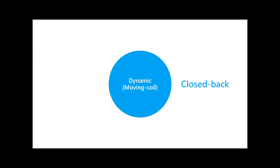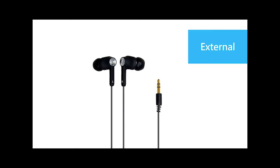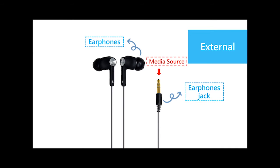So let's start with their components. In the beginning, the external appearance can be divided into earphones and earphones jack. When the earphones jack plugs into a media player or other devices, it will receive an electrical signal and transmit it into earphones to convert it as an acoustic wave.